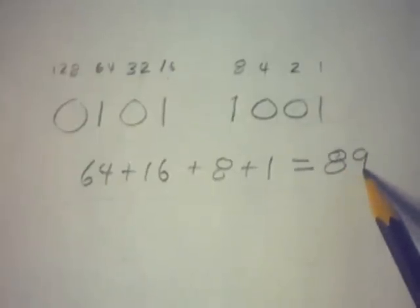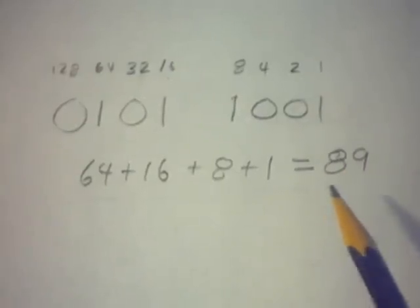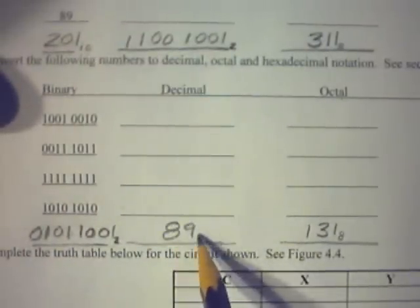That's 89. And this is the decimal equivalent. So, that's the number that we write in this spot. 89 base 10.